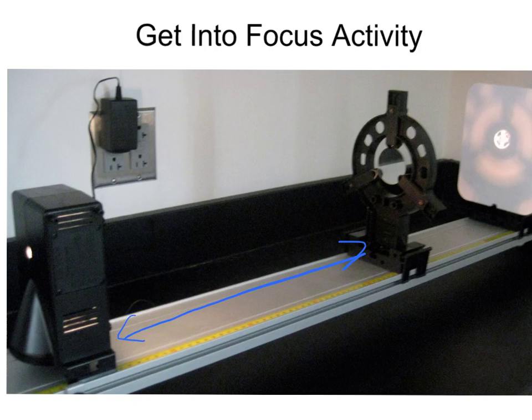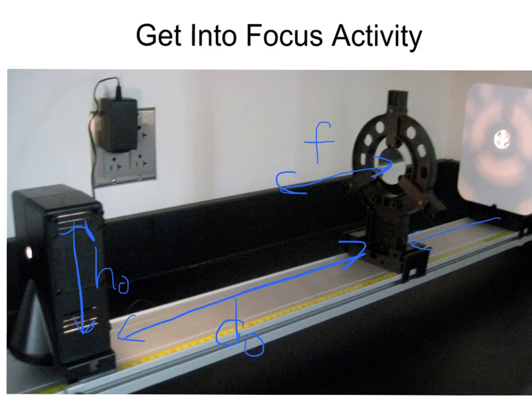The first thing you want to do is set up that object a certain distance away from the lens. You'll have a DO, a distance to your object. You'll also have a height of your object here you'll measure as HO, which will actually be the height of your candle. You'll also have to determine what the focus of your lens is, what the focal length is, so that's going to be F. Those will all be known values. You'll need to move your screen back and forth to get that image nice and clear on the screen.